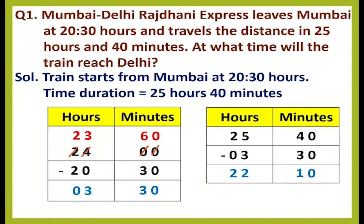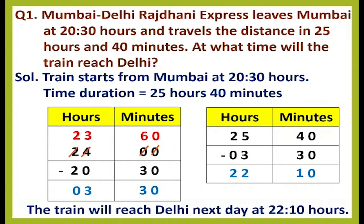We get 22 hours 10 minutes. So the train will reach Delhi at 22:10 hours — not on the same day, but on the next day. The train will reach Delhi next day at 22:10 hours.